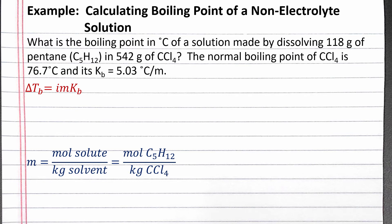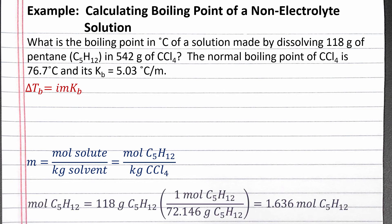To find moles of pentane, we use dimensional analysis to convert 118 grams pentane into moles of pentane. We should get 1.636 moles pentane. Then we can convert 542 grams carbon tetrachloride into kilograms, which is 0.542 kilograms.